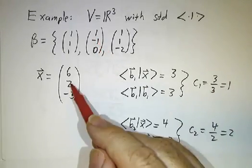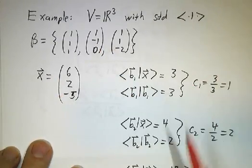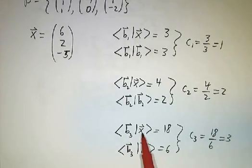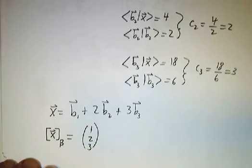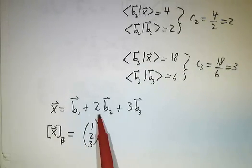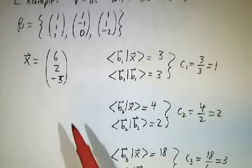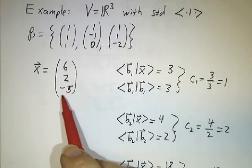The inner product of b2 with x is 6 - 2 + 0 = 4. The inner product of b2 with itself is 2, so our second coefficient is 4 divided by 2, which is 2. For our third coefficient, we take the inner product of b3 with x and get 18. The inner product of b3 with itself is 6, so the ratio is 3. That means our vector must be 1 times b1 plus 2 times b2 plus 3 times b3, and you can check that this is indeed correct.